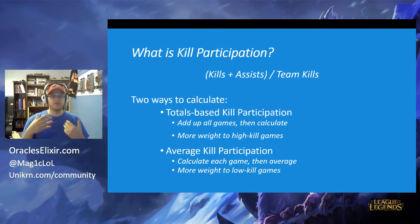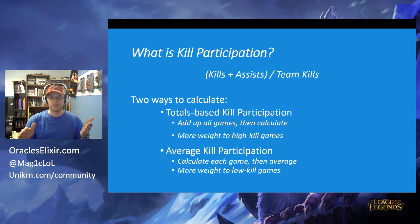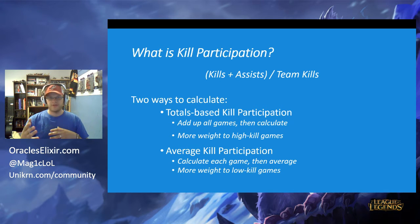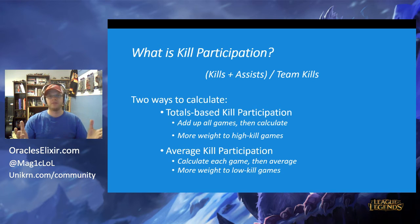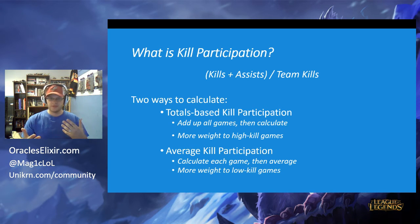The other way is average kill participation, where you produce a percentage for each game individually and then average those percentages. So in our previous example, if you had 40 out of 50 in one game, that's 80%. If you had one out of five in the other game, that's 20%. You average between the two and get 50%.